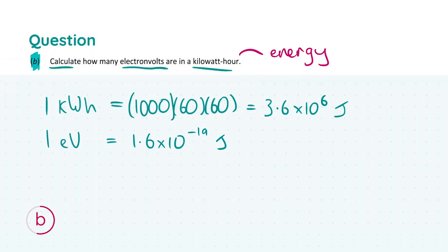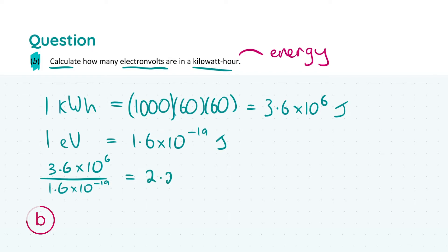Now that we know the joules for a kilowatt hour and for a single electron volt, we're asked how many electron volts are in a kilowatt hour. We divide the joules in a kilowatt hour by the joules per electron volt. So: 3.6 × 10⁶ joules divided by 1.6 × 10⁻¹⁹ joules per electron volt. Plugging this into the calculator gives 2.25 × 10²⁵ electron volts inside one kilowatt hour — makes sense since a kilowatt hour is large and an electron volt is tiny.